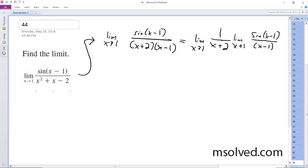This actually works out pretty nice for us. As x approaches 1, the left portion becomes 1/3, and this portion follows the same trend as sine of theta over theta, which becomes 1, so this becomes 1/3 overall.